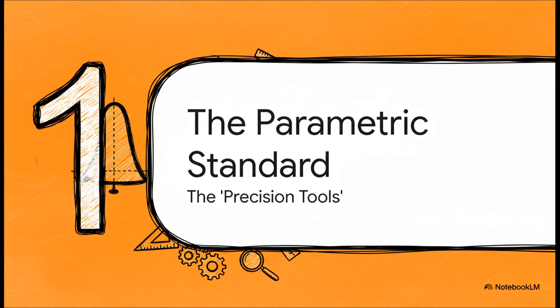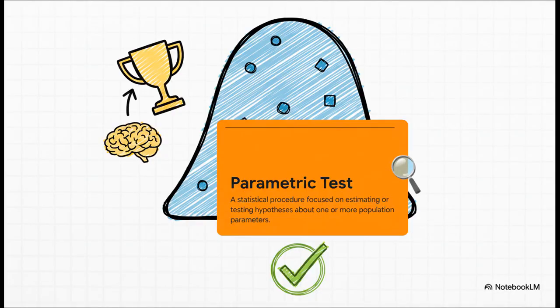First up, let's talk about the parametric standard. Think of these as the precision tools in our kit — a surgeon's scalpel, something designed for a very specific job. When you use them under the right conditions, they are incredibly powerful and pinpoint accurate. So what makes a test parametric? It all boils down to one critical word: assumptions. A parametric test doesn't just look at your numbers — it assumes your numbers are playing by a certain set of rules.